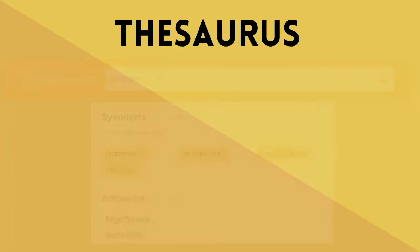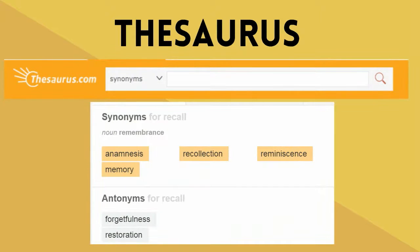Thesaurus. If you get stuck writing a paper and you need a new word, then Thesaurus will come to the rescue. Type in any word and synonyms and antonyms will pop right up to help you with your paper.